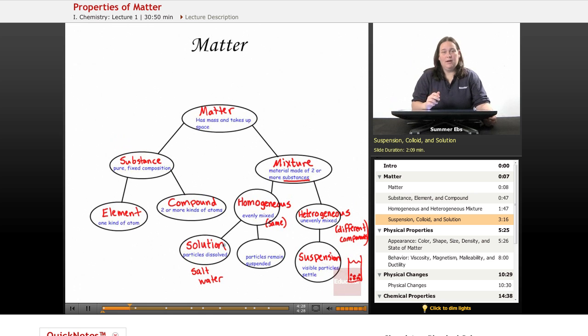Another type of homogeneous mixture. So it all is going to look the same. But in this case, the particles are going to remain suspended. So they're not dissolved. They're actually still there in the material itself. But you can't actually see them because the particles are so small. This is called a colloid.